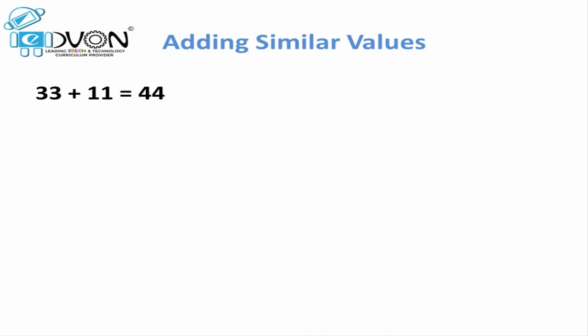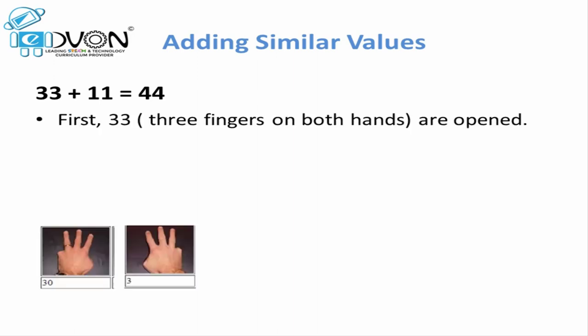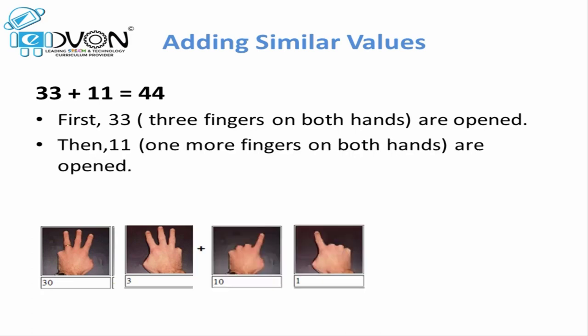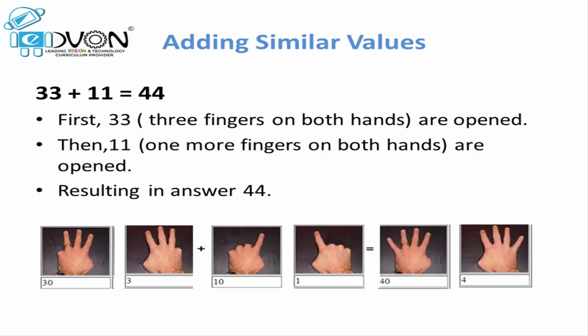Let's learn addition of similar values on our fingers. For example, if we want to add 33 and 11 together: first, we place 33 by opening three fingers on both hands. Then to add 11, we open one more finger on each hand. As a result, we get four fingers on both hands, which means 40 on the left and 4 on the right. This makes it 44. So our answer is 44.